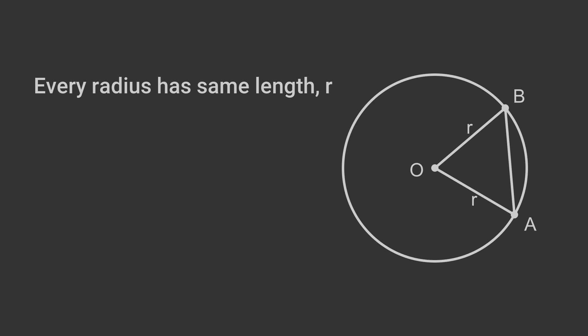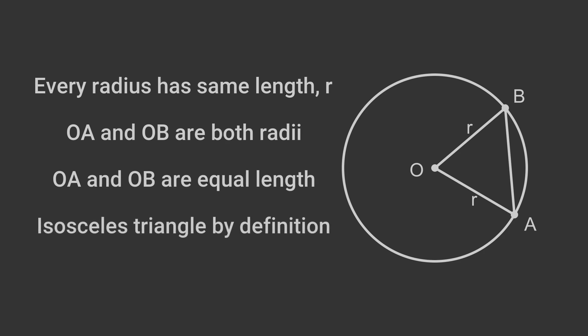The triangle OAB, where A and B are on the circumference of the circle, has sides OA and OB that are both radii of the circle. This means that the two sides of the triangle have equal length. That is an isosceles triangle by definition.